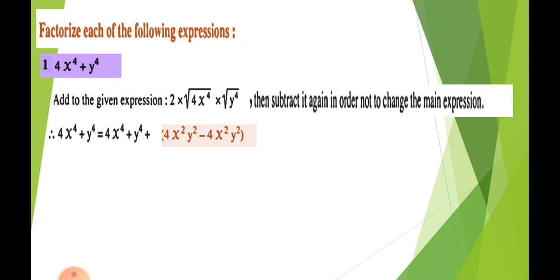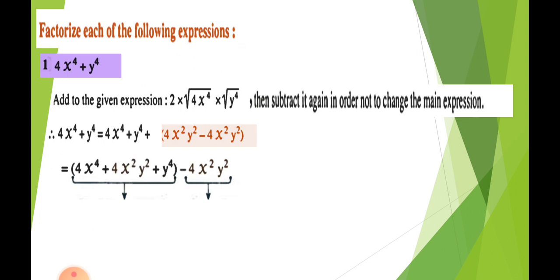We add two times the square root of the first term times the square root of the second term, then add and subtract. We change the form without changing the value. Using the commutative property, we write: 4x⁴ + 4x²y² + y⁴ − 4x²y². This expression consists of two parts: the first is a perfect square trinomial and the second is a perfect square, with a negative sign between them.